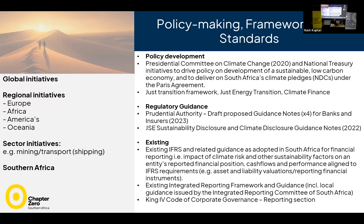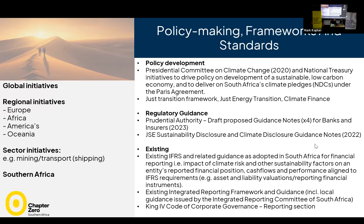On the regulatory guidance side, the Prudential Authority here in South Africa has recently issued four draft proposed guidance notes for banks and insurers to help them create their own disclosure regimes aligned to global expectations. It says: you've been doing great so far, but now we need to align it all under a system of disclosure specific to banks and insurers that also speaks to the Prudential Authority's own key priorities for the financial system in South Africa. It's still in draft and will hopefully be finalized before the end of the year.